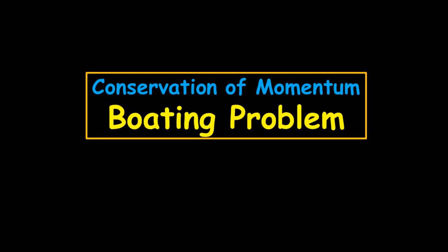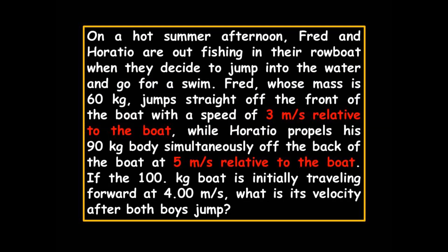On a hot summer afternoon, Fred and Horatio are out fishing in their rowboat when they decide to jump in and go for a swim. Fred, whose mass is 60 kilograms, jumps straight off the front of the boat at three meters per second relative to the boat, while Horatio propels his 90-kilogram body simultaneously off the back at five meters per second relative to the boat. The 100-kilogram boat is initially traveling forward at four meters per second. What is its velocity after both boys jump?